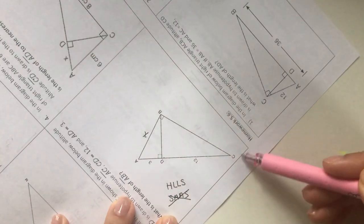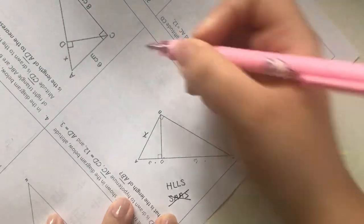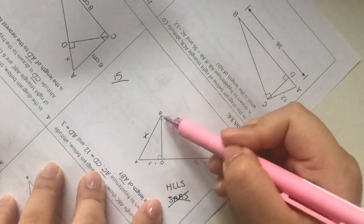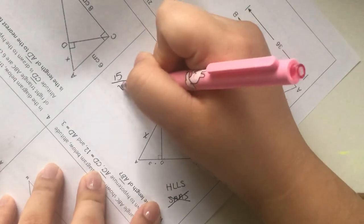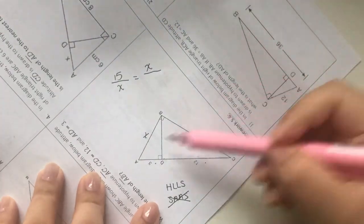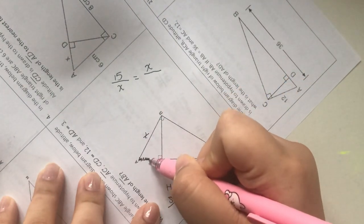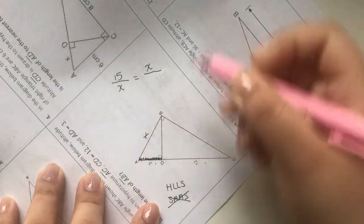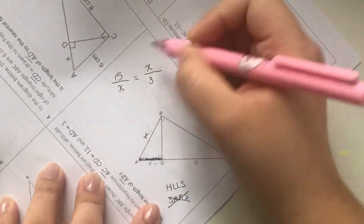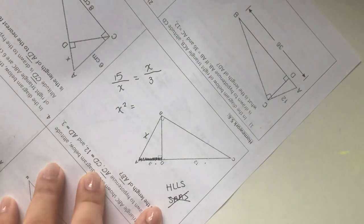H represents hypotenuse, the longest side, which is AC. AC is the entire thing, so 3 plus 12 equals 15. So 15 on top, leg is AB which is X we don't know, equals leg over the shadow. The shadow is the line segment underneath the leg, which equals 3.